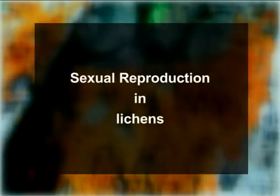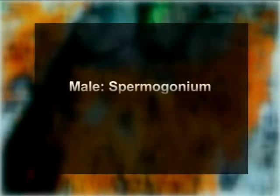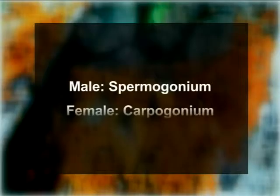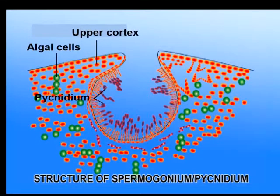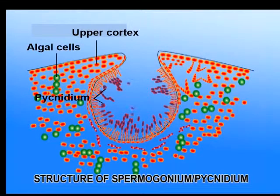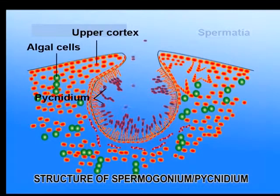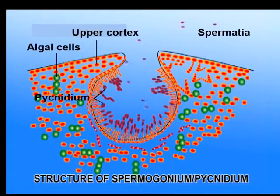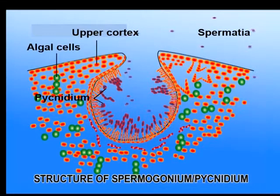Sexual reproduction in lichens is concerned with the fungal partner of the lichen thallus. The male reproductive organ is called the spermogonium, and the female reproductive organ is called the carpogonium. In some species of lichens, pycnidia-like structures function as spermogonia. Each spermogonium is a flask-shaped structure and opens by a small pore called an ostiole. The cavity of the spermogonium is filled with sterile and fertile hyphae. The fertile hyphae cut off small rounded cells at their tips, which are male gametes called spermatia.